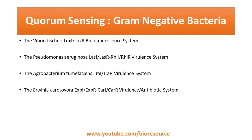There are different quorum sensing signaling systems in gram negative bacteria. These include the LuxI/LuxR bioluminescence system of Vibrio fischeri, the Pseudomonas aeruginosa LasI/LasR and RhlI/RhlR virulence system, the Agrobacterium tumefaciens TraI/TraR virulence system, and the Erwinia carotovora ExpI/ExpR and CarI/CarR virulence and antibiotic systems.